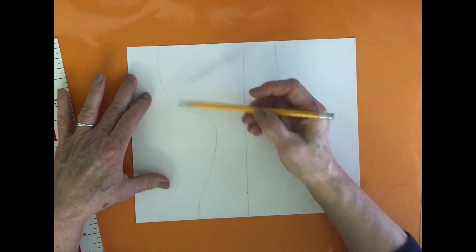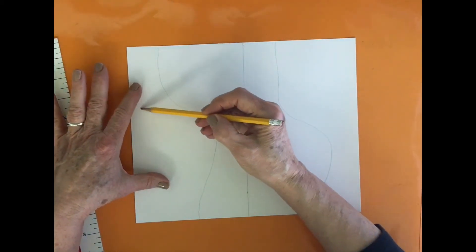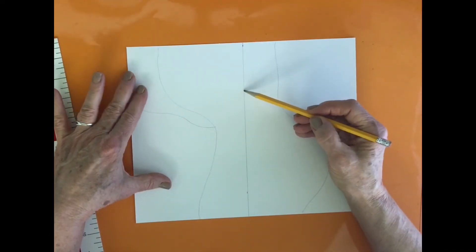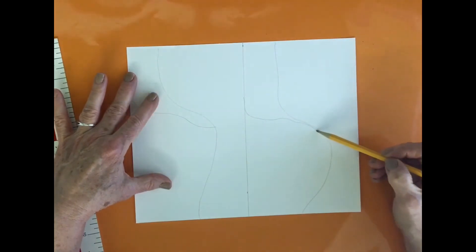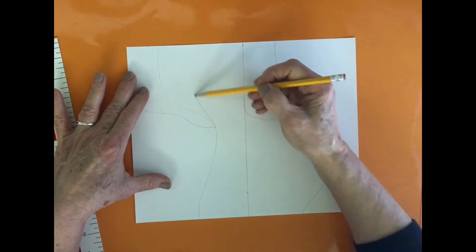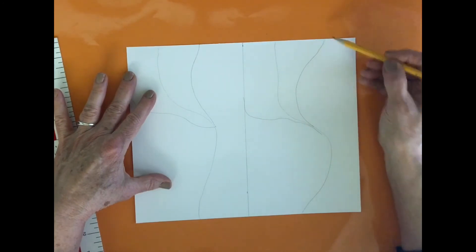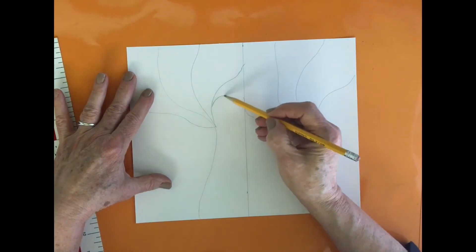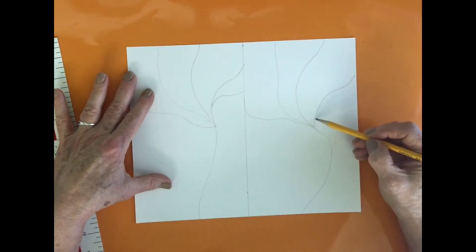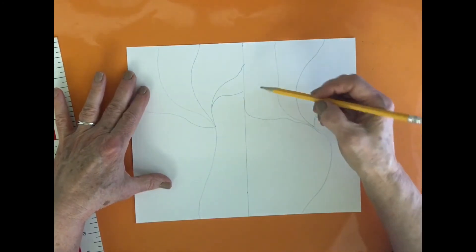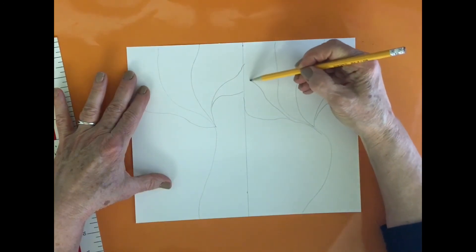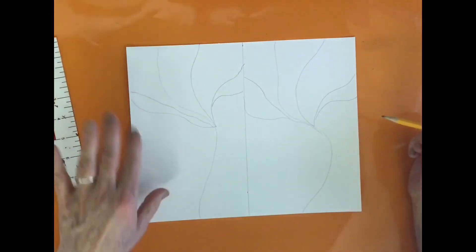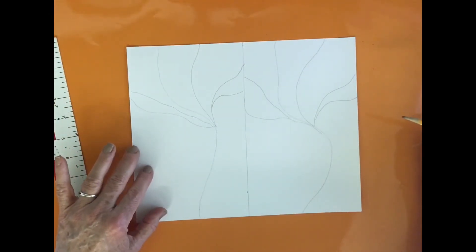I'm going to draw flowing lines on both sides. They don't look the same exactly but they're similar.